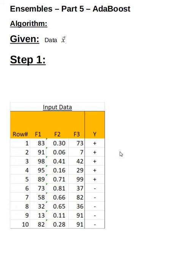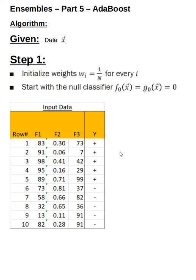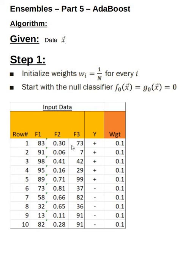Step one: adaptive boosting initializes the weights Wi equally for the initial dataset. It assigns weights for each data point as 1/n. We have ten points, so 1/n is 0.1, which is ten percent. Ten percent of weight is given to each data point. On top of that, it creates a null classifier based on the algorithm chosen, whether decision tree based or regression based.